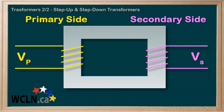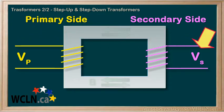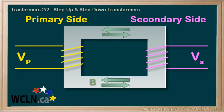The isolation transformer that we built in the previous tutorial transfers AC power from one circuit to a second circuit using magnetic fields. Very cool — an interesting phenomenon for sure, but we didn't transform any voltage.